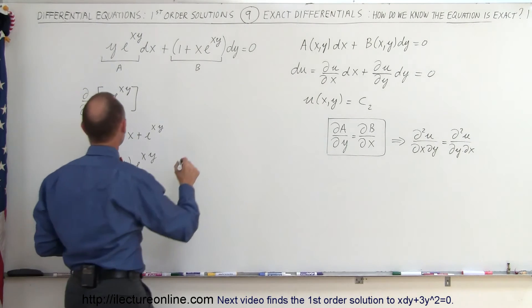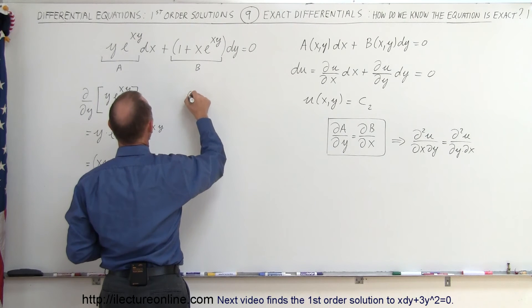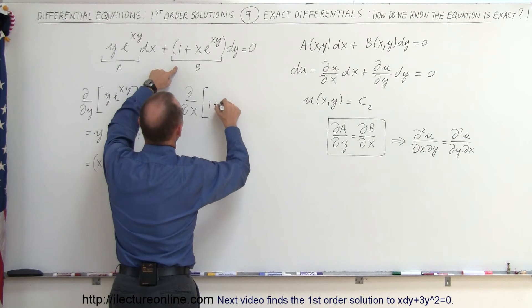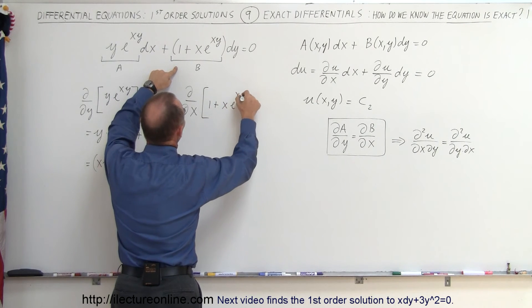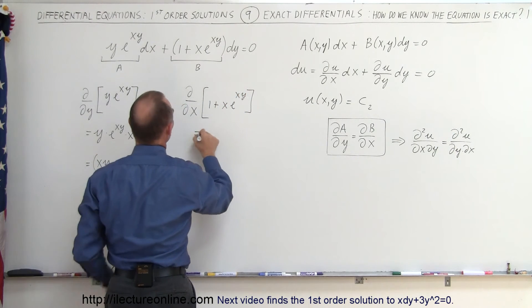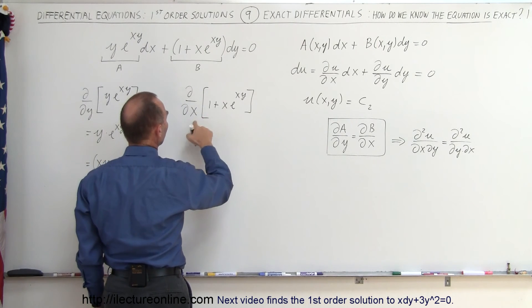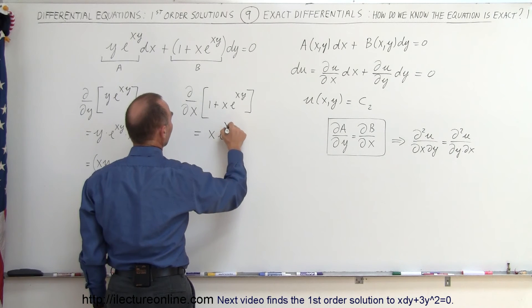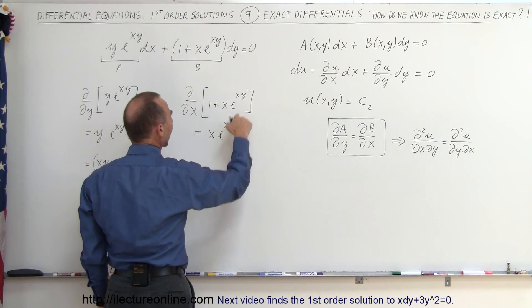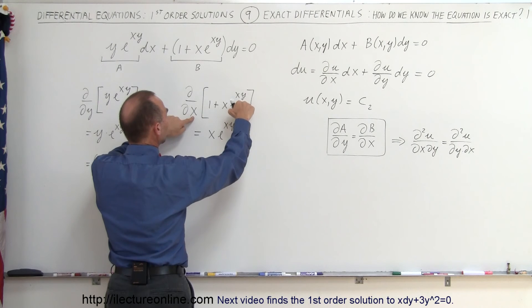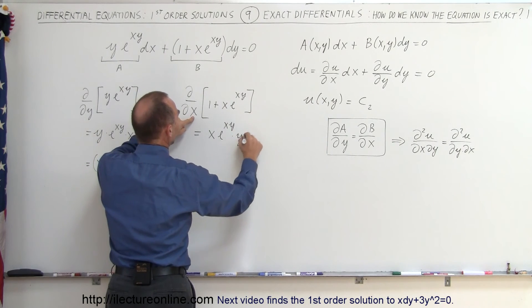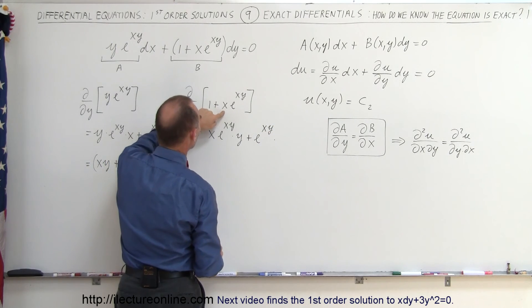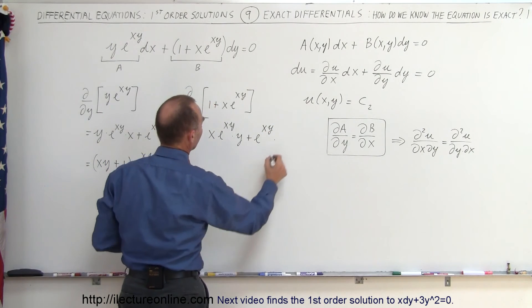Now let's find the partial of b with respect to x. The partial with respect to x of the quantity (1 + x·e^(xy)): we take the derivative of 1, which is 0, plus the derivative of x·e^(xy) — using the product rule, that's the first times the derivative of the second, which is e^(xy) times the derivative of the exponent with respect to x, giving times y, plus the second, which is e^(xy), times the derivative of the first, and the derivative of x with respect to x is 1.